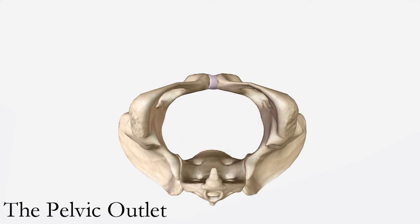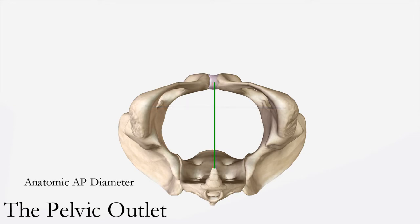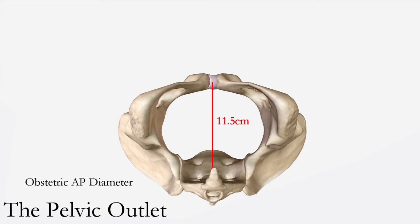Four diameters can be measured in the pelvic outlet: the anatomic anteroposterior diameter, the obstetric anteroposterior diameter, the transverse or bituberous diameter, and the posterior sagittal diameter. The anatomic AP diameter is the distance between the inferior margin of the pubis and the tip of the coccyx, averaging 9.5 cm. The obstetric AP diameter is measured from the inferior margin of the pubis to the sacrococcygeal joint at the midline, averaging 11.5 cm.